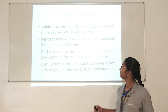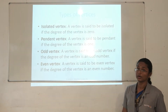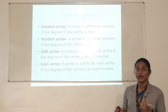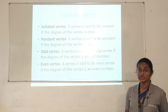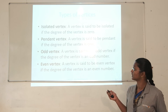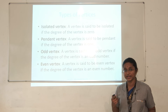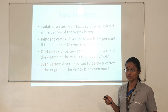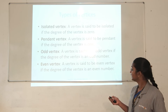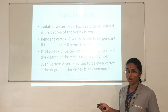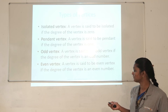Based on the degree of a vertex, there are different classifications. An isolated vertex is a vertex having degree zero — no edges are connected to it. A pendant vertex has exactly one edge connecting to it, so its degree is one. An odd vertex is one whose degree is odd, and an even vertex is one whose degree is even.